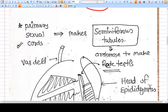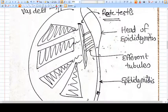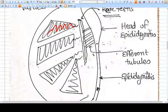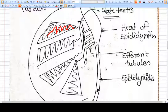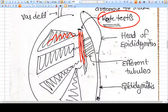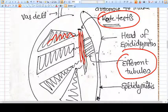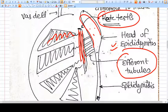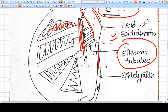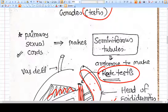If you see the structure of testis, these are the seminiferous tubules, which make the sperm. From the tubules, sperm will go into this thing called rete testis. From this rete testis, the efferent tubules will take those sperm into the head of epididymis. From the epididymis, the sperm will travel to the tail of epididymis.